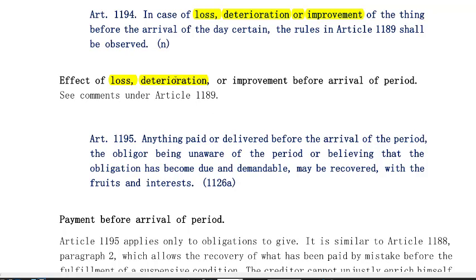If you would recall, if the deterioration is with debtor's fault, the creditor may choose either rescission or cancellation of the obligation plus damages, or fulfillment plus damages. But it is alternative and not cumulative. So if the creditor chooses rescission, he can no longer ask for fulfillment, and vice versa. However, if fulfillment is no longer possible, he could ask for the rescission of the obligation.